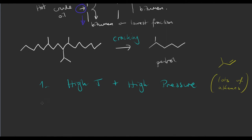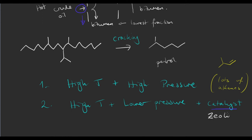Or you could use high temperature, lower pressure — still slightly higher than atmospheric — and a catalyst. A catalyst is just something that helps the reaction go but isn't used up itself. The catalyst used here is often called a zeolite catalyst. This method is often used to create motor fuel, for example petrol and diesel, and also to get aromatic hydrocarbons — hydrocarbons in ring form, like toluene. So it creates more motor fuels in a more controlled way.